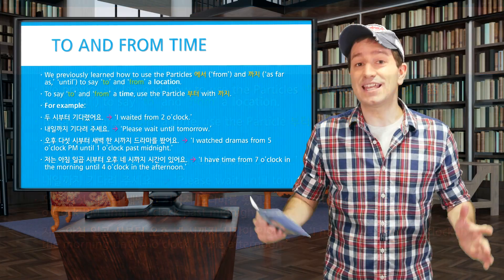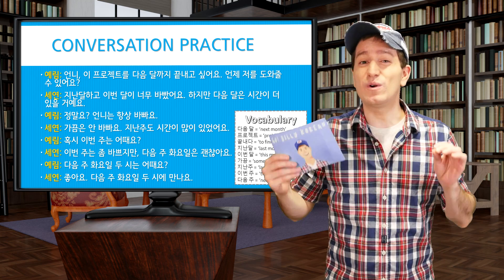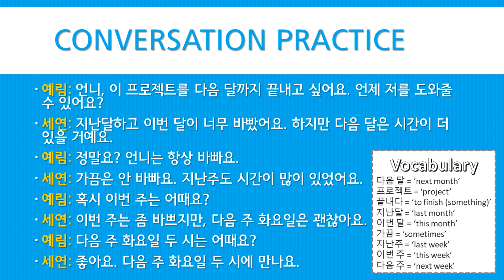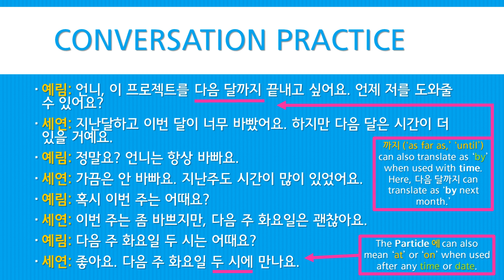Let's put everything we've learned about time and dates into a conversation between 예림 and 세연. 예림 says: 언니, 이 프로젝트를 다음 달까지 끝내고 싶어요 — Older sister, I want to finish this project by next month. Note that 까지 can also translate as 'by' when used together with a time, so 다음 달까지 means 'by next month'.